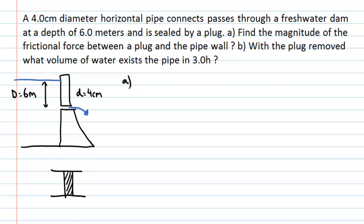On one side of the plug, we have the force of the water, which we can write as the pressure of the water multiplied by the area of the plug. There's another pushing force on the other side, because that side is open to air — that force is the pressure of atmosphere multiplied by the area of the plug, and it's smaller.